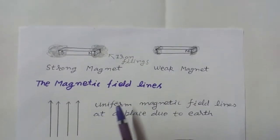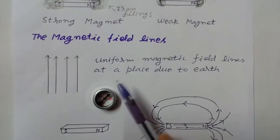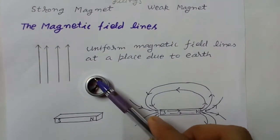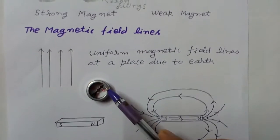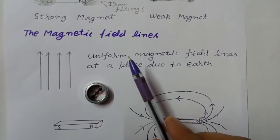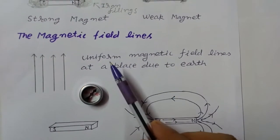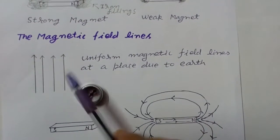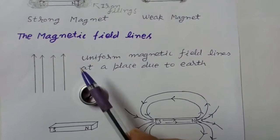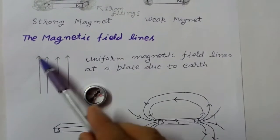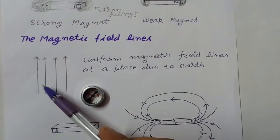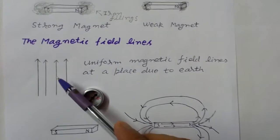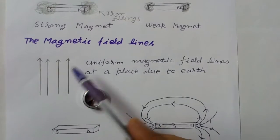Now, magnetic field lines. We can draw magnetic field lines at a place with the help of a small compass needle. The uniform magnetic field lines at a place due to earth are represented by parallel lines.